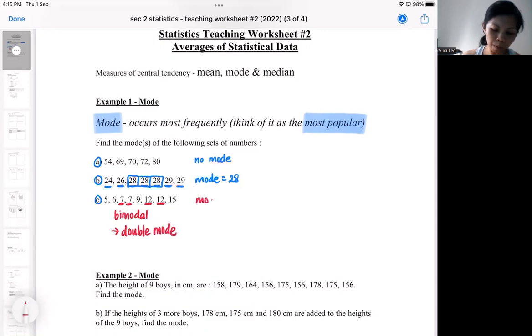In this case, I have two popular numbers: seven and 12. So that's the idea of being popular. That's the idea of mode. That's why it is one of the easiest ones.